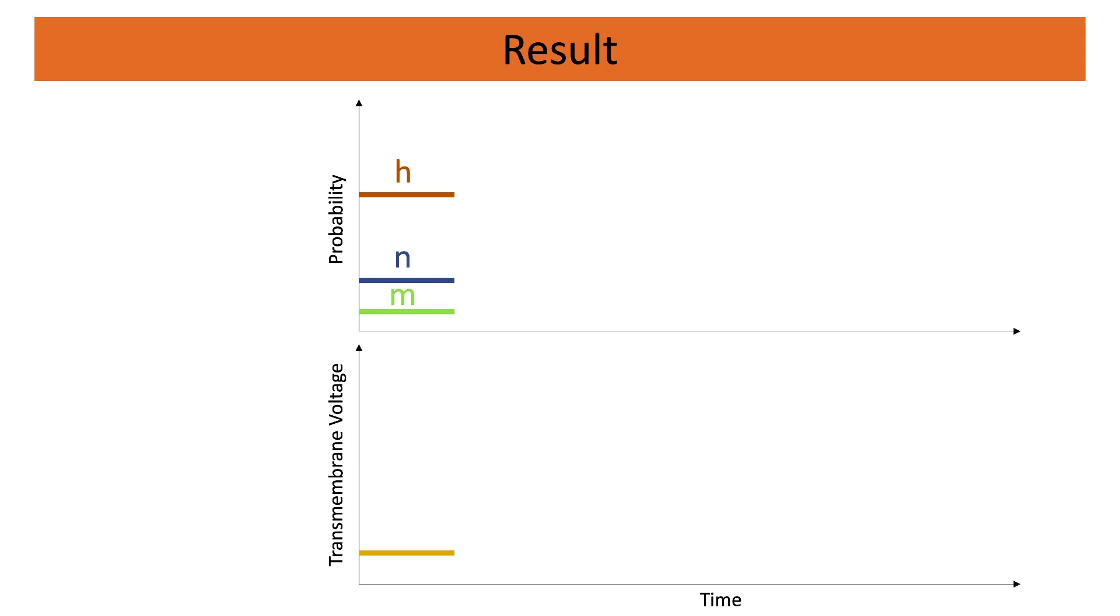The result, however, would be the following: neither M, H, nor N or VM would move out of their steady state. We need to introduce an external stimulus to introduce a change to VM, which then in turn will change the rest of the system.